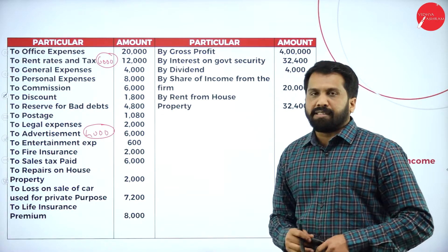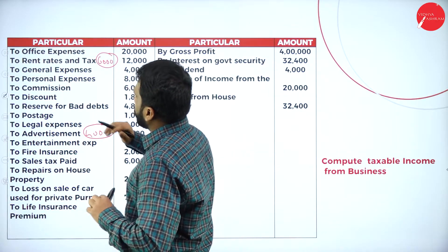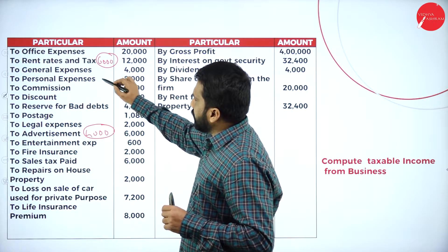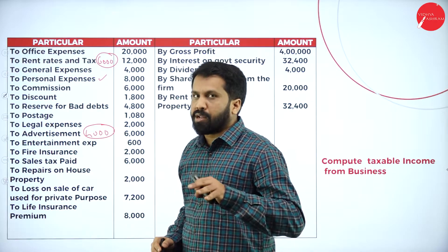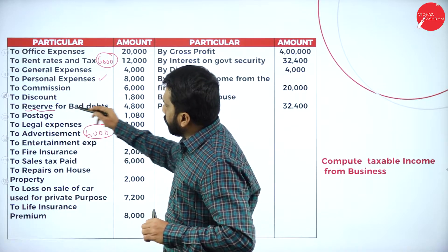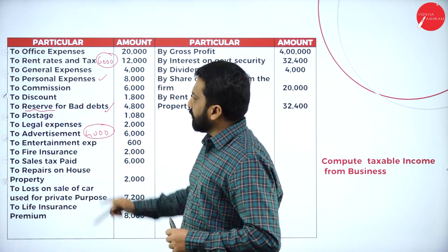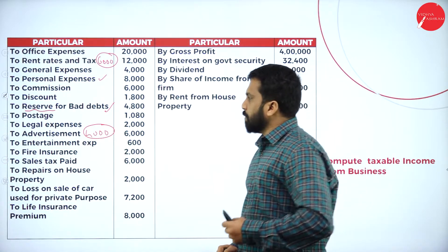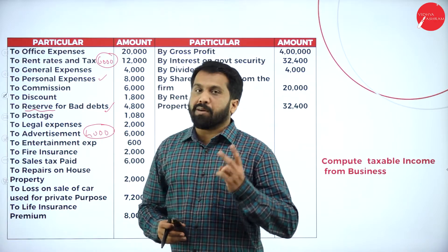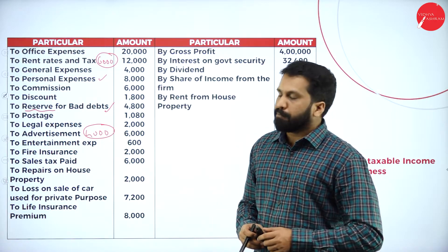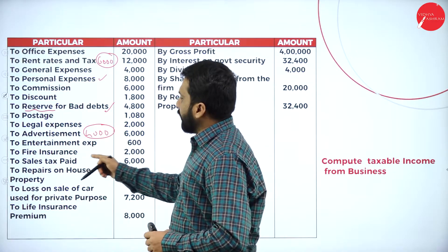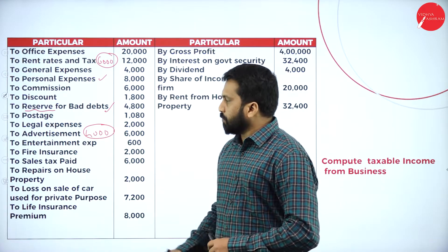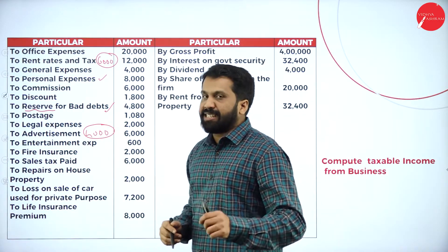Now I will go through the answer. Your office expenses — don't take, because it is part of business. Rent — take only 6,000. General expenditure — part of business. Personal expenses — take. Commission — part of business. Discount — part of business. Any word called reserve, you have to take. Postages — part of business. Legal expenses — they mentioned it is related to trademark, so business purpose. Advertisement — we consider only 4,000 out of 6,000, as 2,000 is for business and balance 4,000 is personal. Entertainment — part of business. Fire insurance — part of business. Sales tax — part of business.